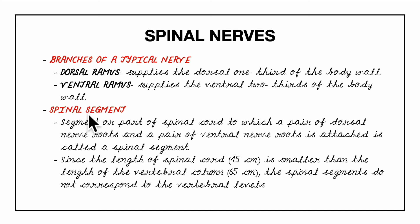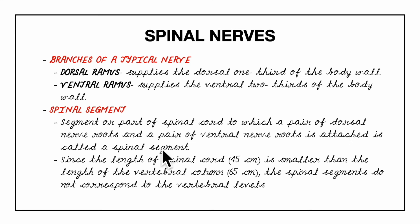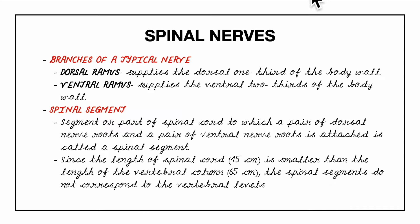A spinal segment is defined as the part of the spinal cord to which a pair of dorsal nerve rootlets and a pair of ventral nerve rootlets are attached. Since the length of the spinal cord is smaller than that of the vertebral column, the spinal segments do not correspond to the vertebral levels.